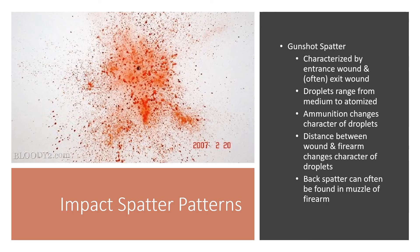Gunshot spatter, aside from any other high velocity impact, is characterized by an entrance wound and often an exit wound — because the bullet is moving so fast, it takes a lot of resistance to slow it down, particularly from rifles. The droplets can range from medium to atomized depending on what is created by the entrance and exit wounds and how close the person was to the surface that the bullet ultimately embedded itself in. Ammunition type can also change the character of the droplets.